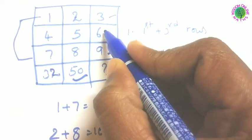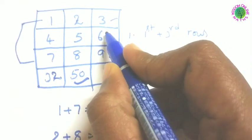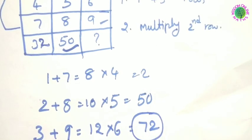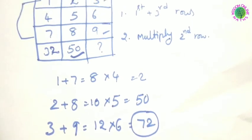After that you have to multiply with the second row digit here. Second row digit 6, 12 into 6, 12, 6 is there, 72 is the answer for our puzzle.